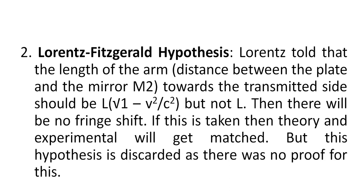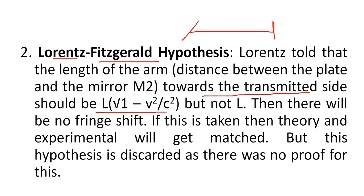The second hypothesis is the Lorentz-FitzGerald hypothesis, given by the two scientists Lorentz and FitzGerald. Lorentz stated that the length of the arm — that is, the distance between the plate and the mirror M2 towards the transmitted side — should be L multiplied by the square root of (1 minus v squared by c squared), and not simply L, where L is the original length between the plate and the mirror. With this correction, there will be no fringe shift, and theory and experimental results will match. But this hypothesis was also discarded as there was no proof for it.